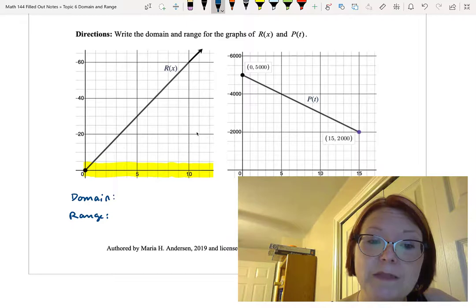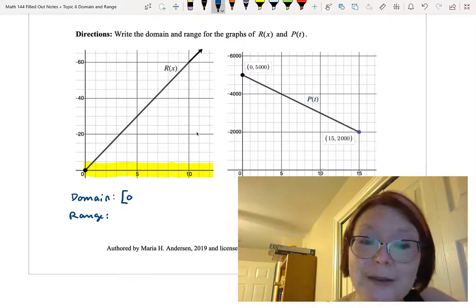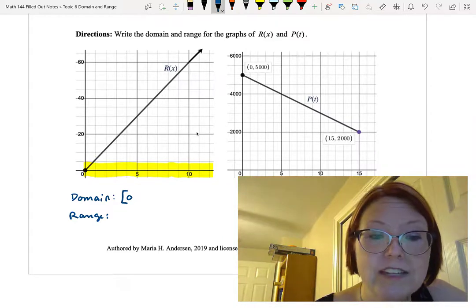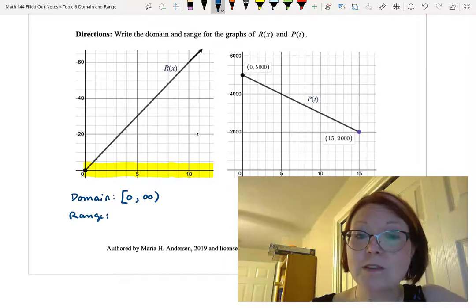When we think about this we start at 0 with a bracket on 0 because we are including the endpoint of 0, and we continue to positive infinity with a right parenthesis on that. So left bracket 0 comma infinity right parenthesis.